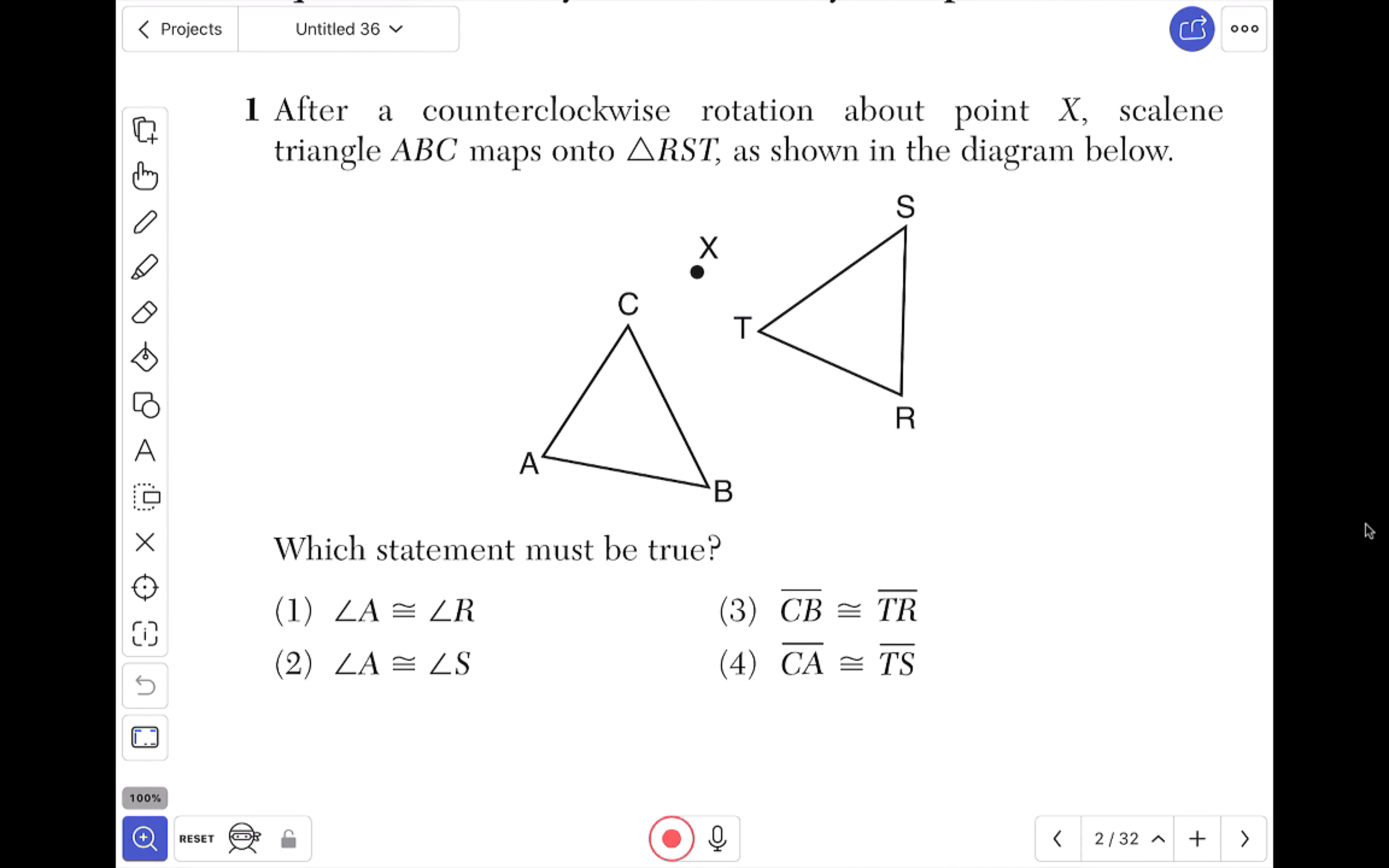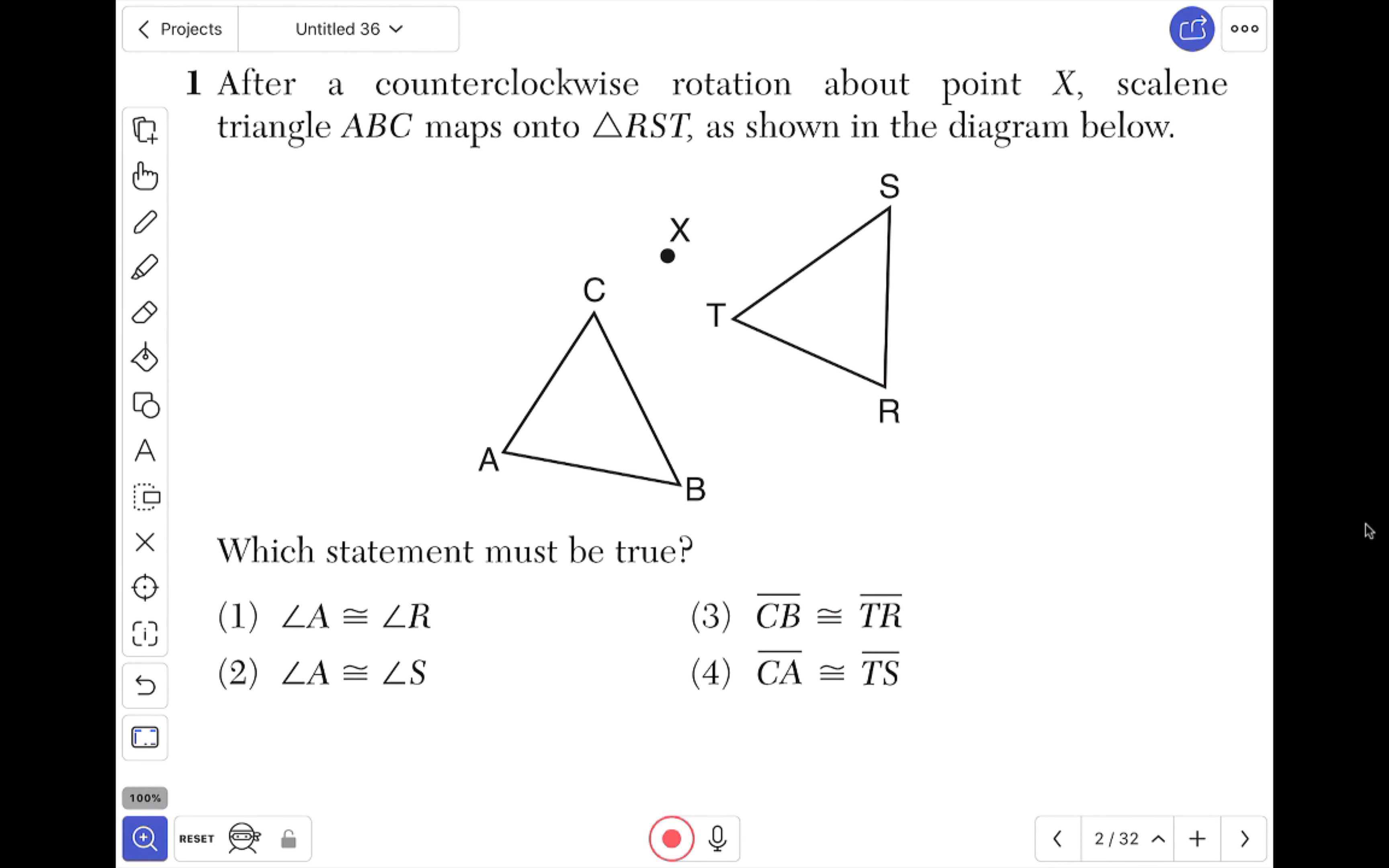Now all of a sudden I can make question number two disappear and I'll zoom in on question number one. I'm going to press record and I'm reading and I always use the laser pointer. It says after a counterclockwise rotation about point X, oh there's point X, scalene triangle ABC maps onto triangle RST shown in this diagram right here.